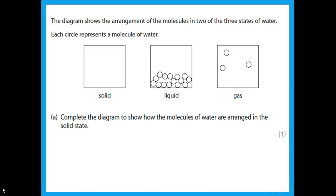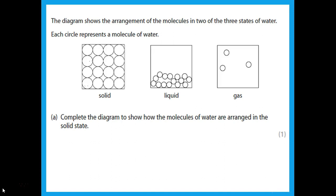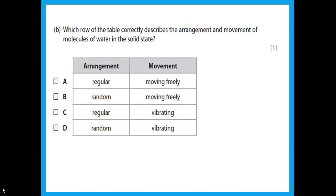A diagram shows the arrangement of molecules in liquid and gas states of water. Complete the diagram to show the solid state. As a solid, you are looking for regular rows with all particles touching each other. For the multiple-choice question on solid state: arrangement is regular and movement is vibrating — so the answer is C.